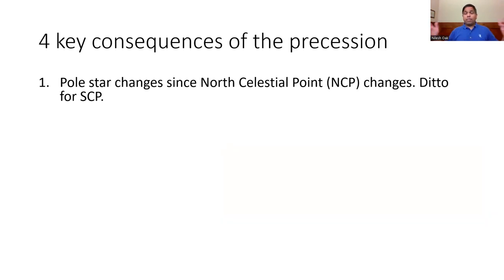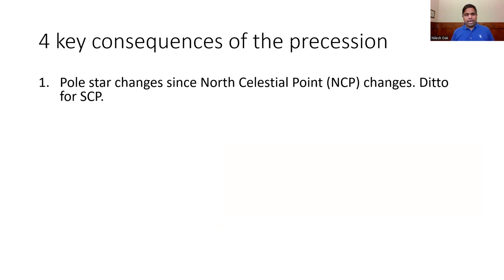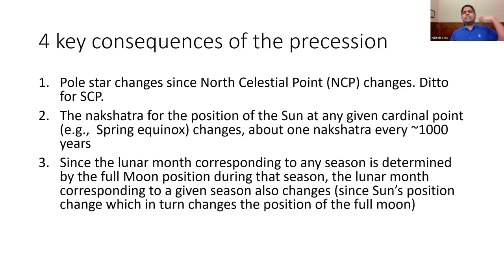Each of the three entities has its own motion: the moon's motion around the Earth, the sun's motion around the Earth, and the motion of the nakshatra reference frame which is actually due to the Earth's axis and its precession — rotating, creating a circle. That creates four types of consequences. These are the four crucial ones. First, the pole star changes because the point of north celestial pole changes. Second, the nakshatra for the sun's position at any cardinal point — like the spring equinox, fall equinox, winter solstice, or summer solstice — changes. It changes about one nakshatra every 1,000 years.